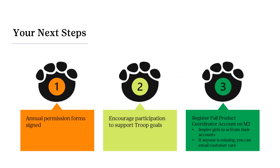And finally, your next steps. One: make sure your annual permission forms are signed. We really need these for girls to participate in any of the activities throughout the year. We know Girl Scout season starts October 1st, but they are able to sign early as long as the dates on the signature match from October 1st to September 30th.